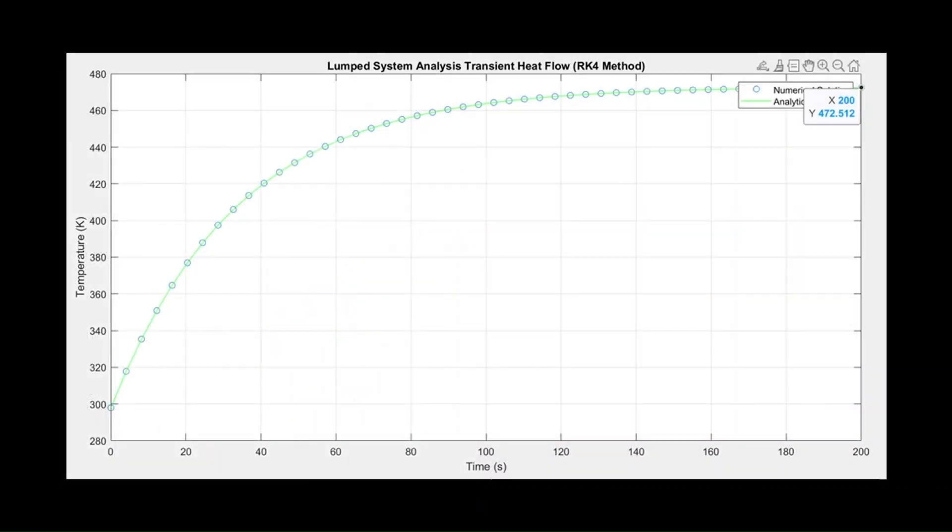This figure shows the thermocouple temperature over time, where the numerical points are highlighted by the circles, and the analytical points are highlighted by the straight line. The numerical solution fits the analytical solution exactly, pointing to the accuracy of the RK4 method. From the graph, we see that it takes around 160 seconds, which is about 2.7 minutes, for the thermocouple to read a steady state and thus record an accurate reading.